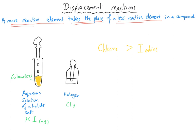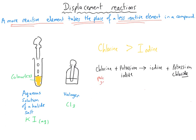The word equation for this reaction is: chlorine + potassium iodide → iodine + potassium chloride. Tracking the colours: chlorine is a very pale yellow (colourless when dilute), potassium iodide and potassium chloride are both colourless, and the iodine produced will be brown — that's our main observation in this experiment.